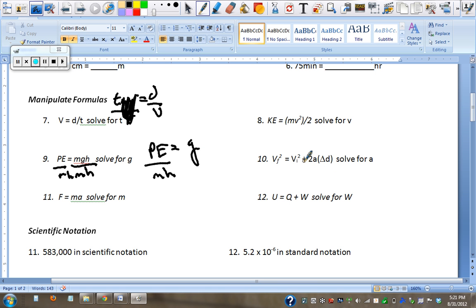Solve for a. First you have to move the one separated by the plus or minus, minus vi squared. Minus vi squared. Now you've got vf squared minus vi squared equals 2ad. Divided by 2d. Divided by 2d. And we're left with acceleration a equals that stuff.